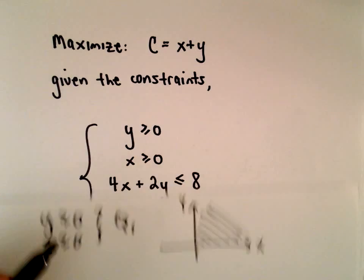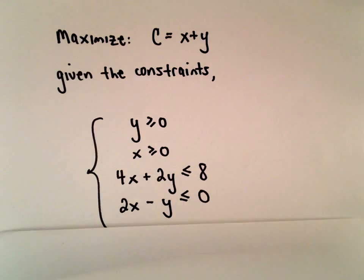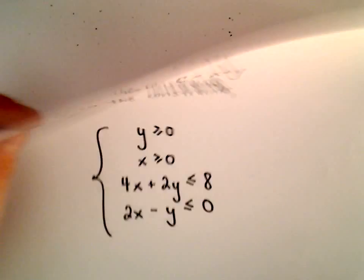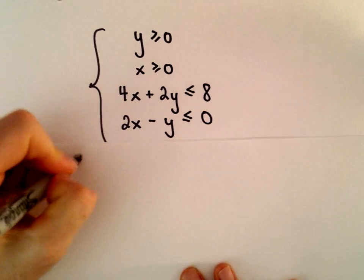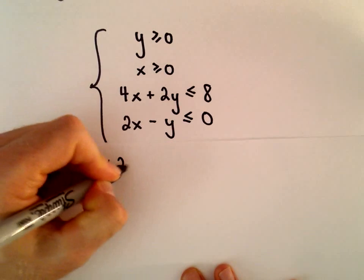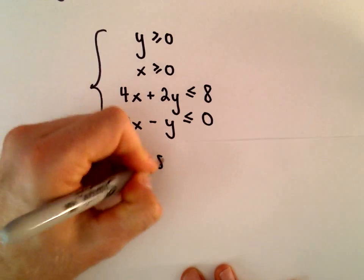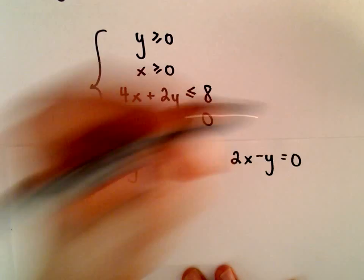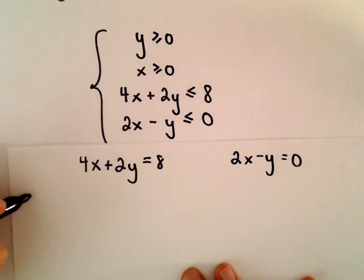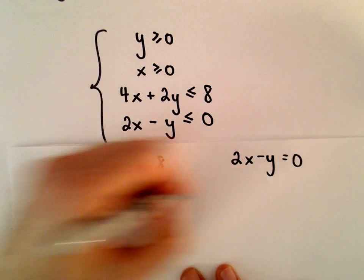So we'll keep that in mind, and then I'm going to start graphing the inequalities 4x plus 2y less than or equal to 8 and 2x minus y less than or equal to 0. So I'm going to start off by making both of these into equations. So both of these are just going to be lines, and to graph these I'm going to find the x and y intercepts of each.